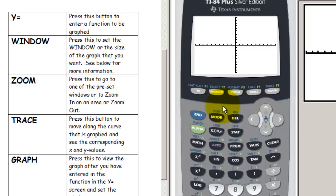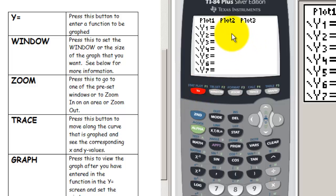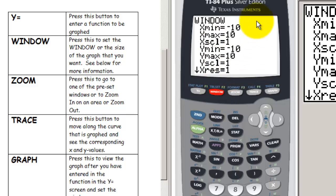Let's begin by looking at the buttons. The first button, the Y equals button, is where you go to enter functions that you want to graph. The second button, the window button, tells your graphing calculator where you want your axes to start and stop.